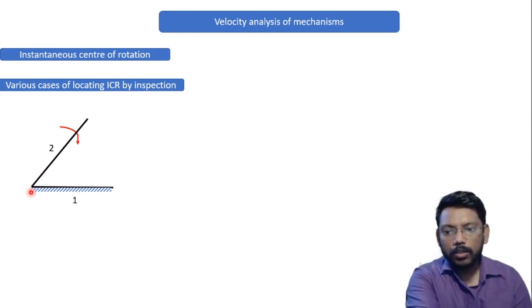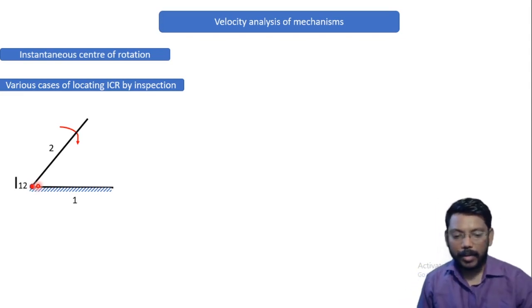So it is very simple. Just look for the point where these two links intersect. So since both the links are intersecting at this point, their ICR will be over here and it will be named as ICR12. So it is that simple, right?